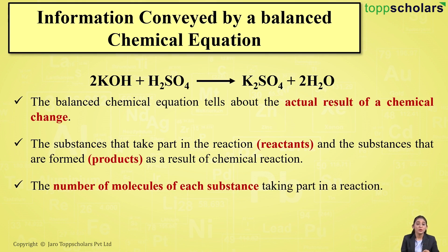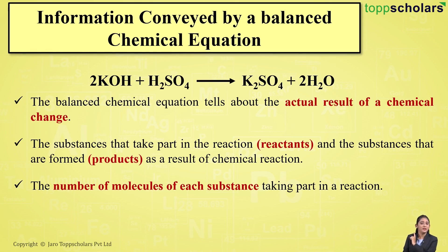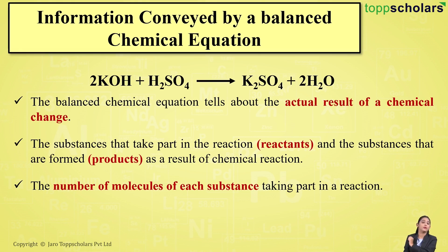The chemical equation also gives us information about the number of molecules of each substance that take part in the reaction. For example, in the above reaction, you can see that two molecules of potassium hydroxide react with one molecule of sulfuric acid, giving one molecule of potassium sulfate and two molecules of water.